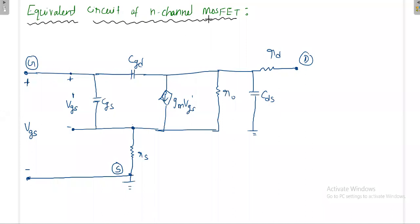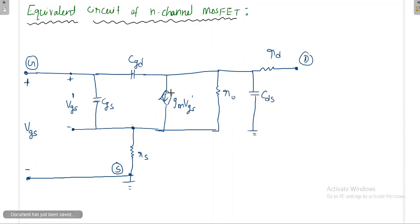This is the equivalent circuit for the N-channel MOSFET with gate, drain, and source terminals. VGS is the external voltage applied between gate and source, and VGS dash is the internal voltage. CGS is the capacitance between gate and internal source terminal; CGD is between gate and drain. GM×VGS is the voltage-dependent current source. R0 is the output resistance, Rd is the drain resistance, and CDS is the capacitance between drain and source.